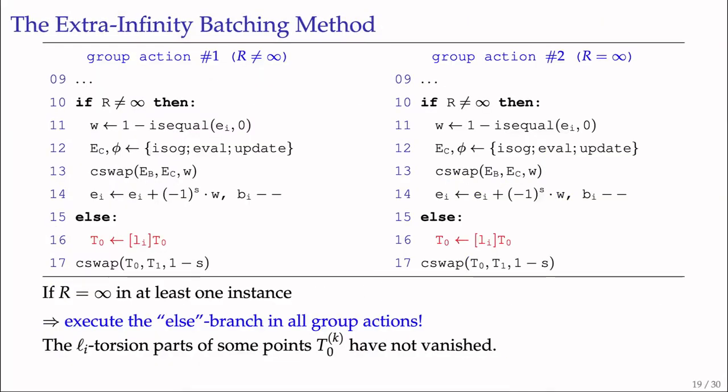Our second batching method is straightforward. We make all instances always agree on the same branch, executing the same operations. If the kernel generator R is infinity in at least one parallel instance, we force all instances to skip the if branch and execute an else branch. In this else branch, there's a new scalar multiplication for T0. This wasn't needed before because the Li-torsion part of T0 had already vanished, but we're forcing all instances to proceed as if all kernel generators were infinity. However, the Li-torsion parts of some points T0 have not vanished.